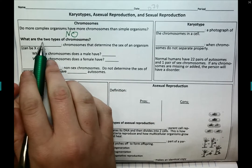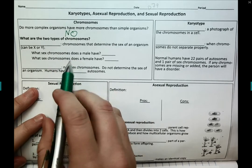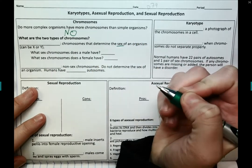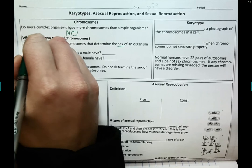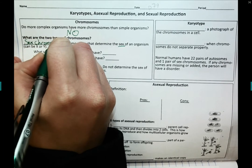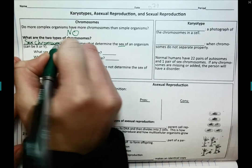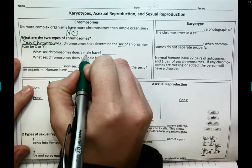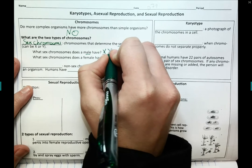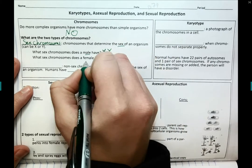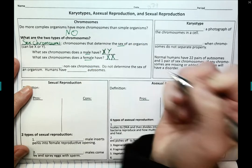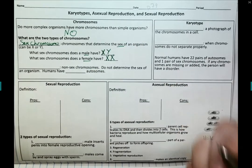There are two types of chromosomes. The chromosomes that determine the sex of the organism are called sex chromosomes — aptly named. If you are male, you will have chromosomes X and Y. If you are female, you have chromosomes X and X.